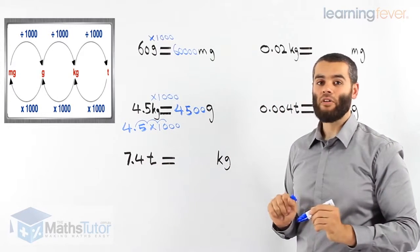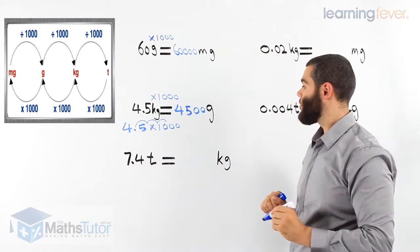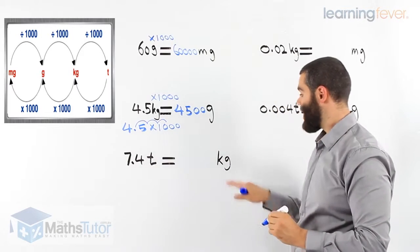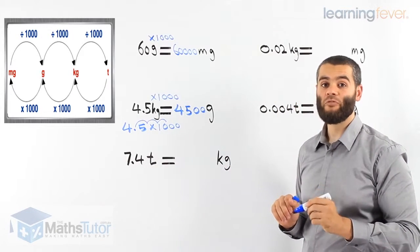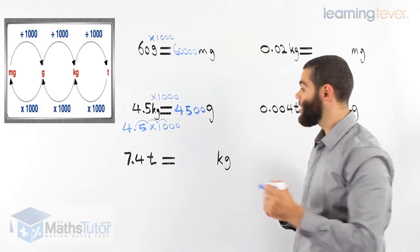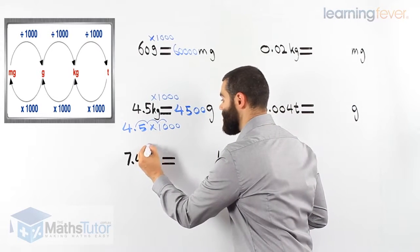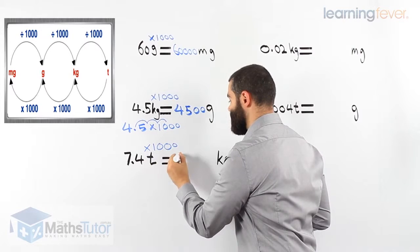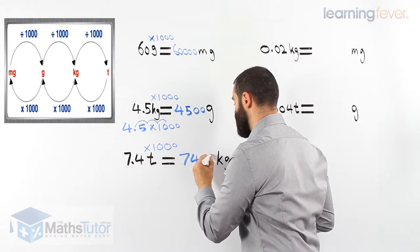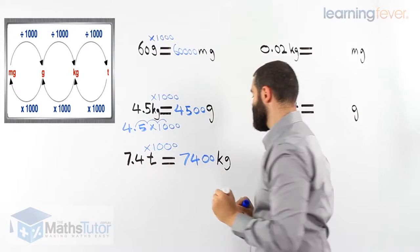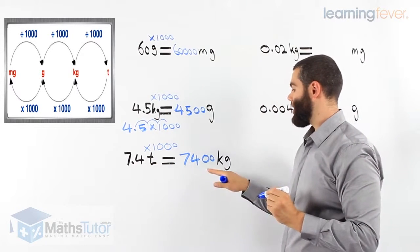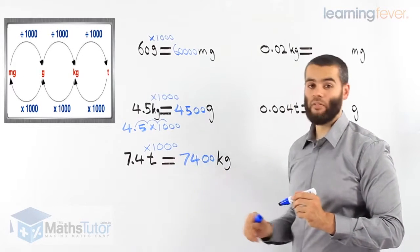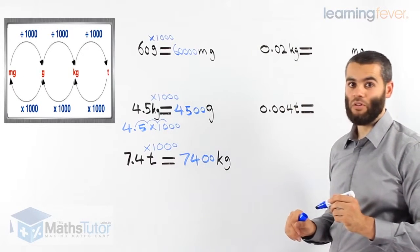Four thousand and five hundred grams. Seven point four tons — how many kilograms is seven point four tons? Tonnes to kilograms, we times by a thousand. Seven thousand and four hundred kilograms. There are seven thousand and four hundred kilograms in seven point four tons.